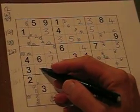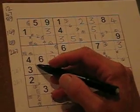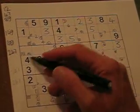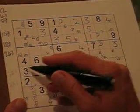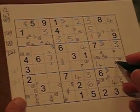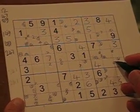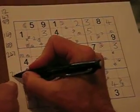In the next square down, exactly the same thing applies. It cannot be a 2, a 4, or a 7. And there are no associated numbers in the associated row: 2, 4, 7.